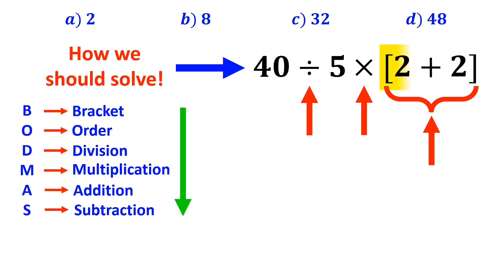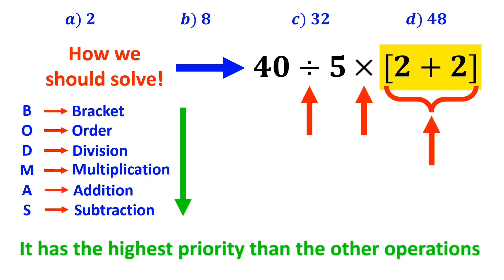Alright, we'll start with the bracket first, because it has the highest priority than the other operations. So this expression simplifies to 40 divided by 5 times 4.